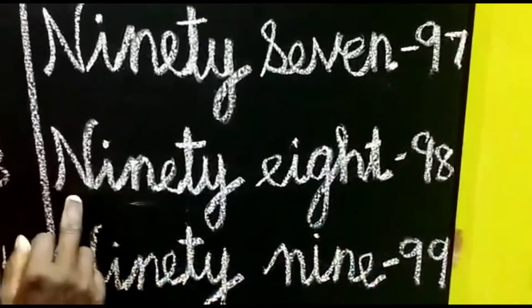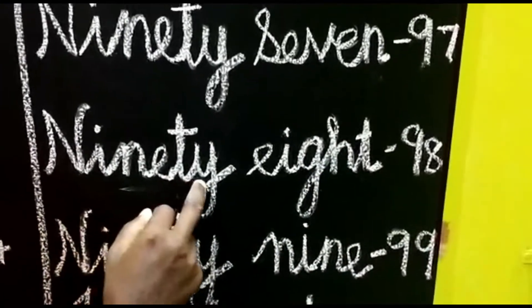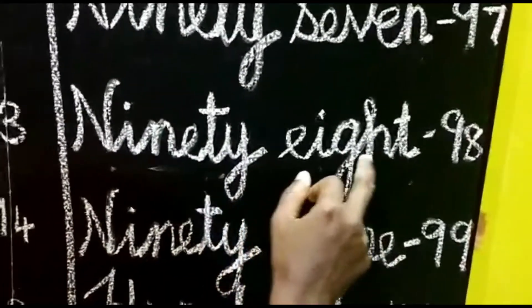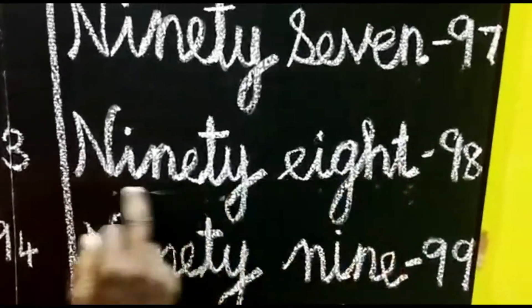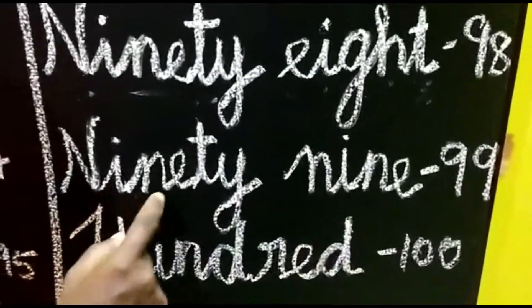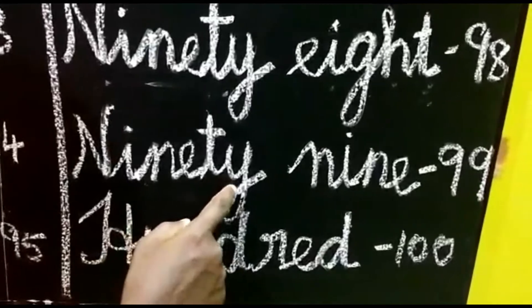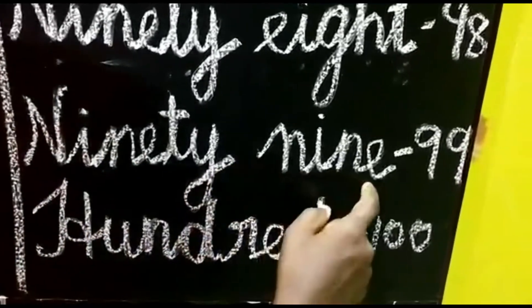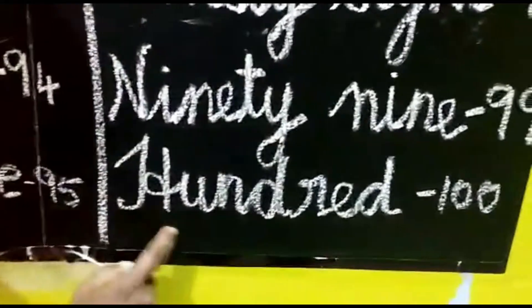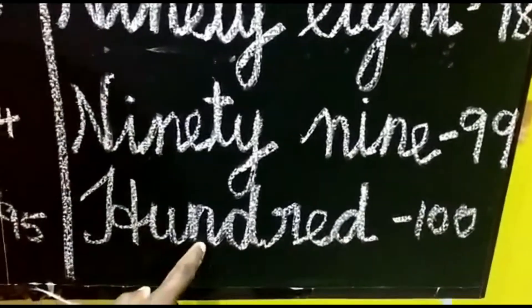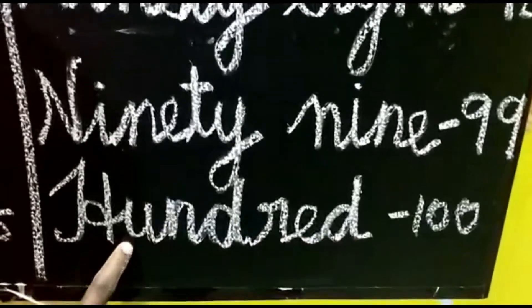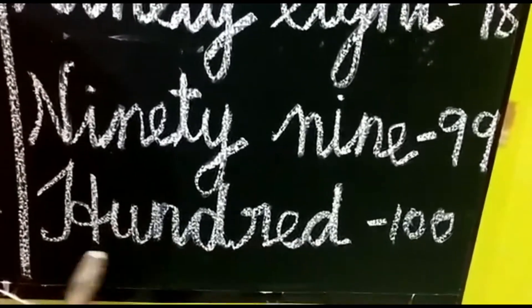98 — N-I-N-E-T-Y, E-I-G-H-T, 8, 98. Then 99 — N-I-N-E-T-Y, N-I-N-E, 99. Then 100 — H-U-N-D-R-E-D. 100. H-U-N-D-R-E-D. 100.